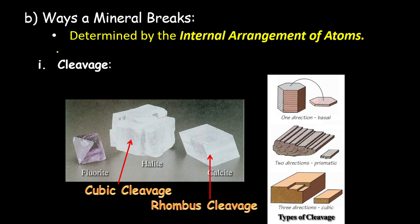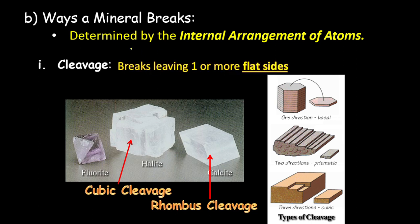Next we have the way a mineral breaks, which is determined by the internal arrangement of atoms. Minerals can break in two ways. The first is cleavage — cleavage is an even break, leaving one or more flat sides. We have three types: cubic cleavage, where the mineral breaks into little cubes; and rhombohedral cleavage, which is essentially a square that is bent.